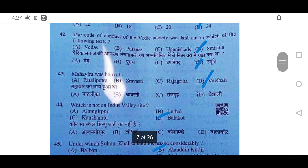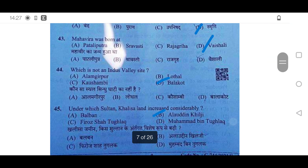42nd question: The code of conduct of the Vedic society was laid out in which of the following texts? It was Smritis. Option D is correct. 43rd: Mahavira was born at Vaishali, a place near Vaishali — so Vaishali is correct.